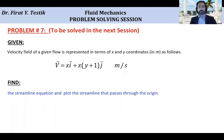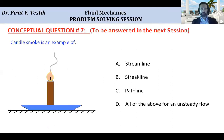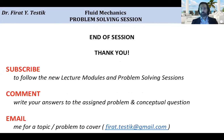Now let's look at the problems assigned for the next session. In the numerical problem, we are given a velocity field defined as V equals X times i-vector plus (XY + 1) times j-vector meters per second, and we are asked to find the streamline equation and plot the streamline that passes through the origin. For the assigned conceptual problem: candle smoke represents an example of which of the following flow lines — A: streamline, B: straight line, C: path line, or D: all of the above for an unsteady flow? That's all for this session. Thank you very much and I look forward to seeing you in the next problem-solving session.